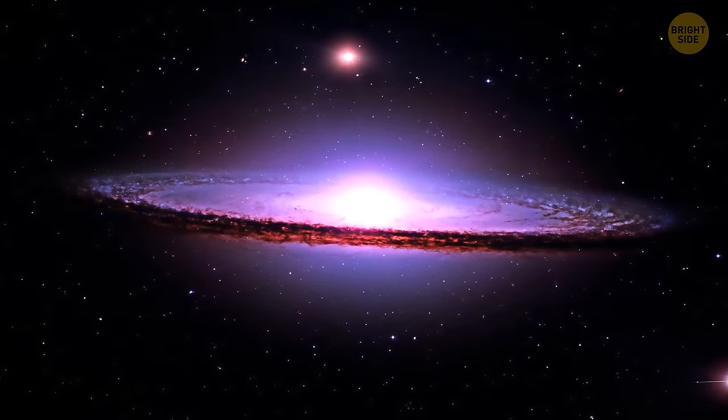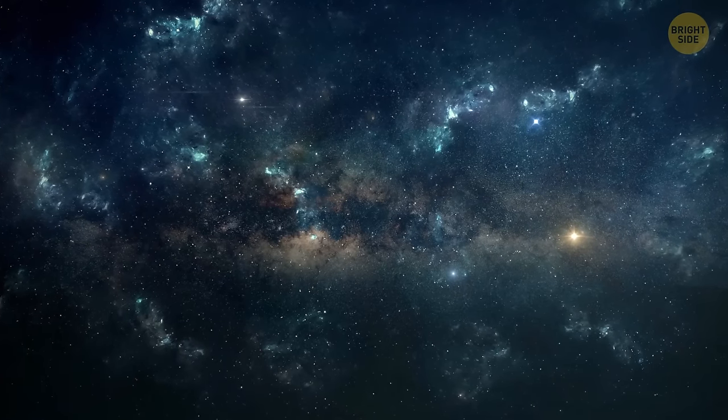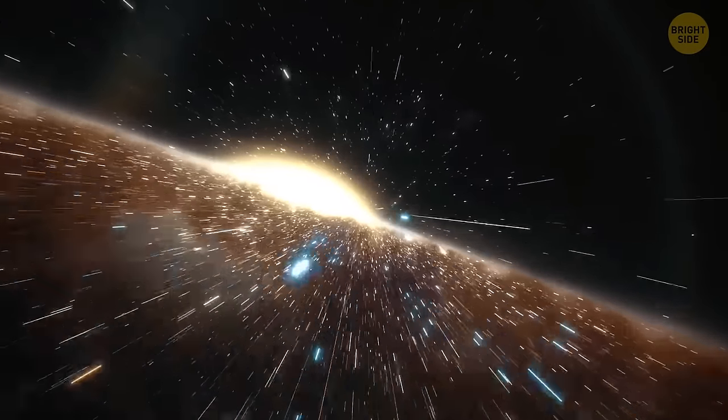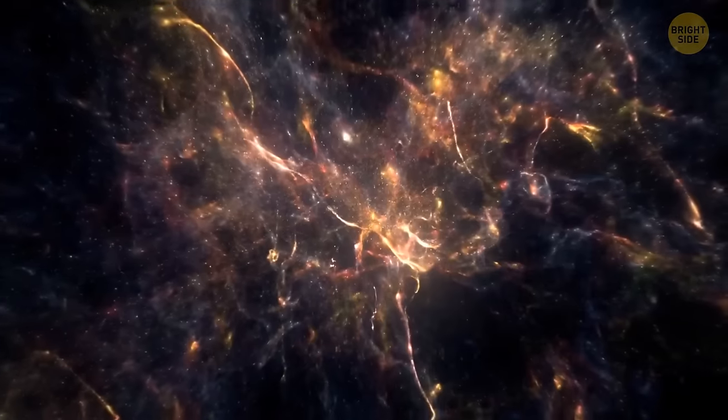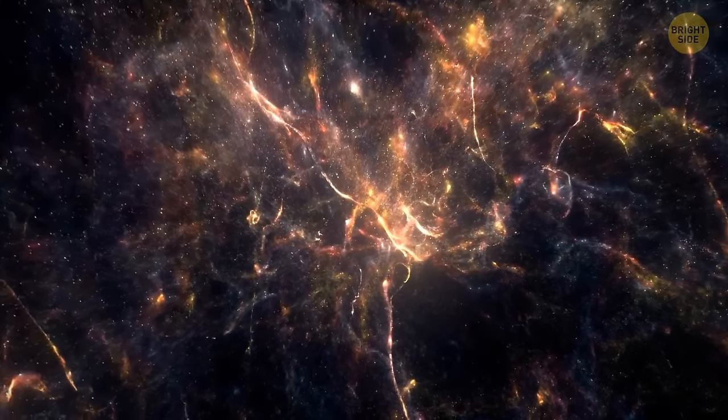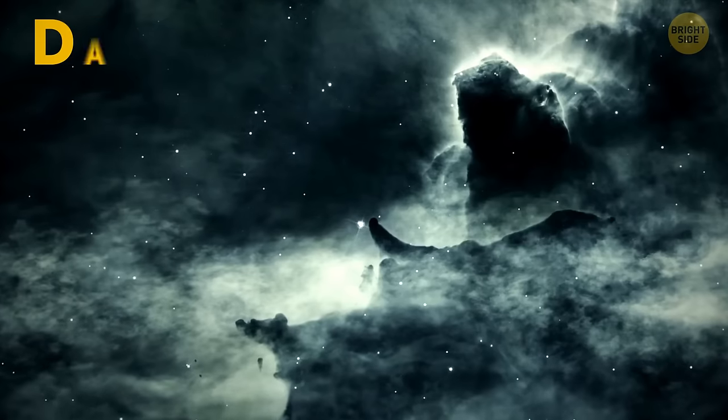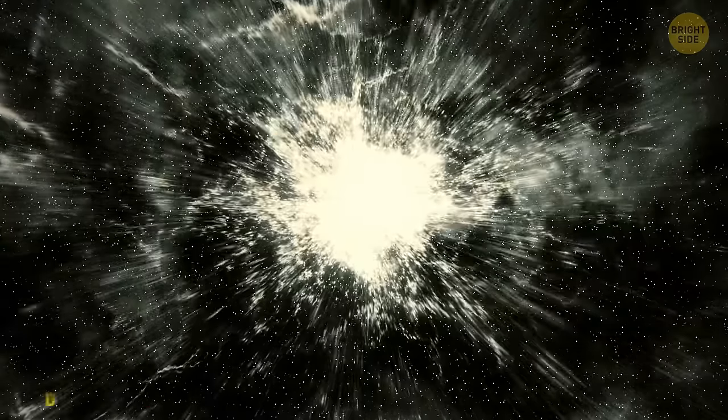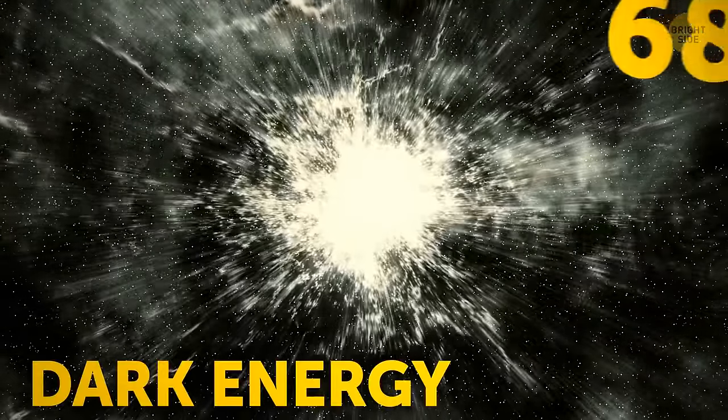Humans explore the universe all the time, but we can only see around 5% of the matter up there. And Albert Einstein was the first one that realized the empty space is not really nothing. The rest we can't see is actually made up of invisible matter, also known as dark matter. It's about 27%. Combined with something called dark energy, which is 68%.